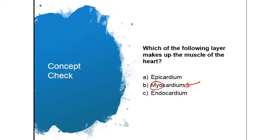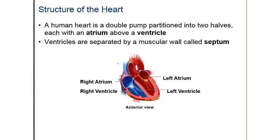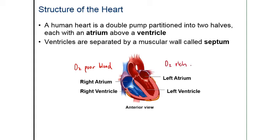Now we are going to look at the structure of the heart. The human heart is a double pump that is separated into two halves — the right half and the left half. The right half typically carries oxygen-poor blood, which we represent in blue, and on the left side we have oxygen-rich blood.